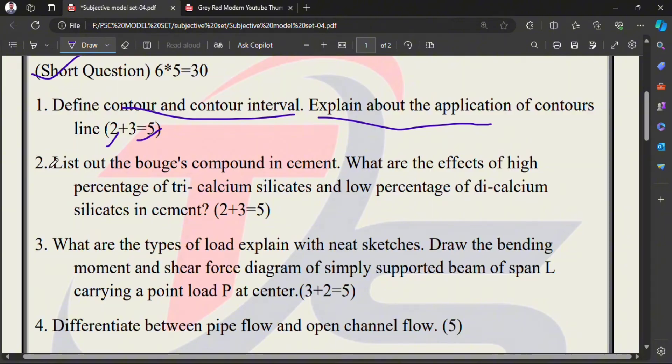List out the bogus compound in cement. C3A, C2S, C3S - bogus compound in cement gives ultimate strength, initial strength, setting time, quick setting. What are the effects of high percentage of tricalcium silicate and low percentage of dicalcium silicate?